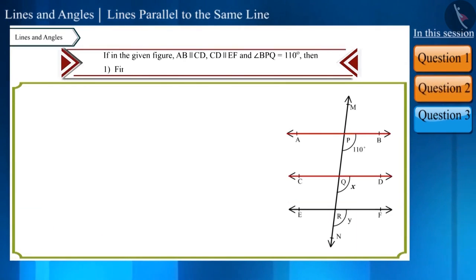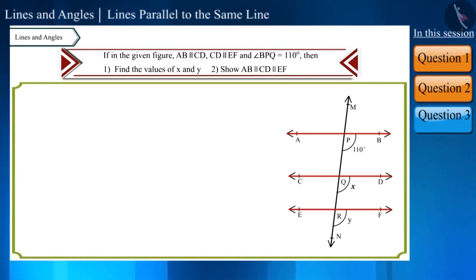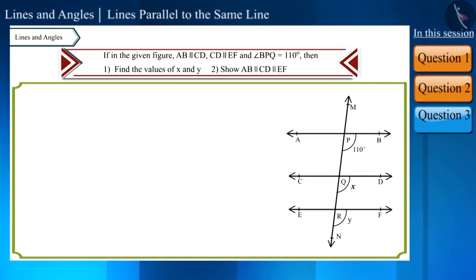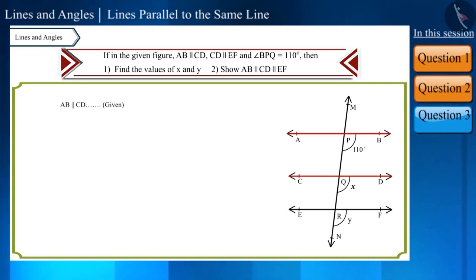Let's move to our next question. In the figure, line AB is parallel to line CD and line CD is parallel to line EF. If angle BPQ equals 110 degrees, find the values of X and Y, and then show that line AB, line CD, and line EF are parallel to each other.